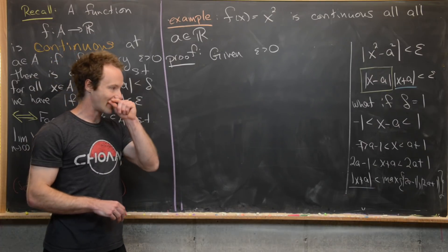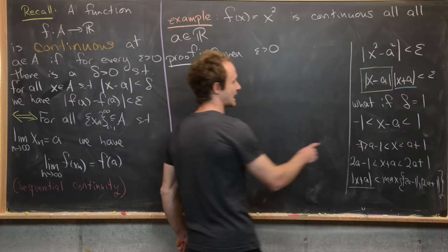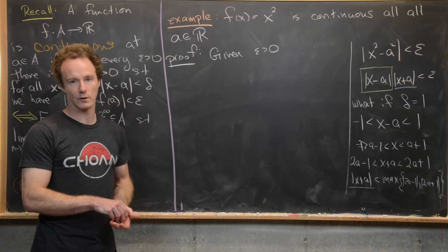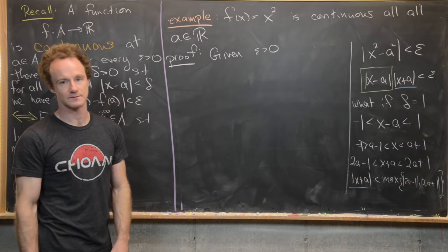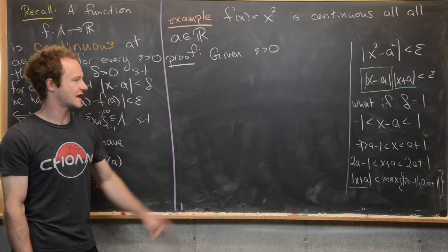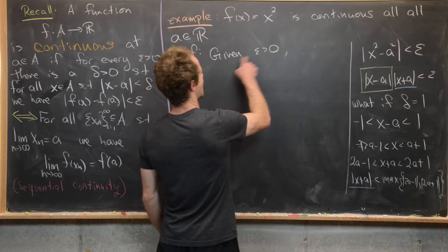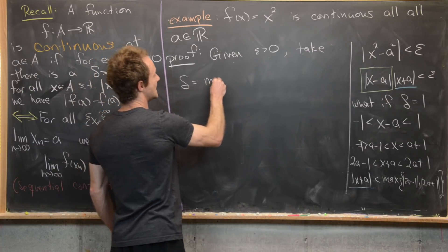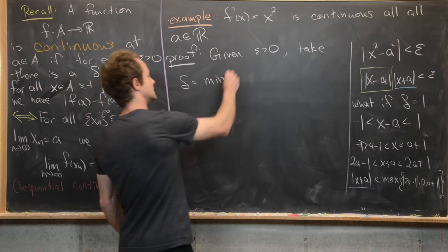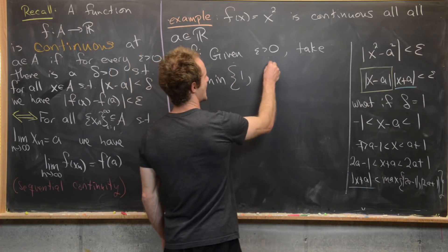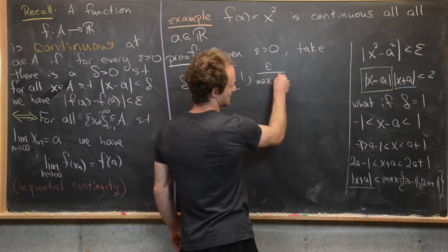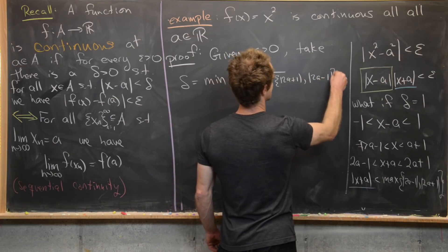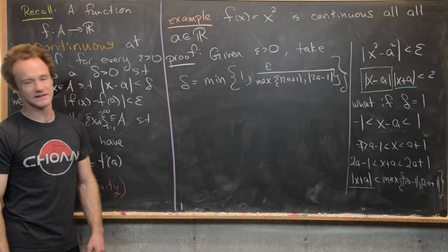With that bound on |x + a|, we can divide it over to isolate |x − a|, and that gives us a good choice for δ. So given ε > 0, let's take δ = min(1, ε / max(|2a + 1|, |2a − 1|)). Now let's verify this works.